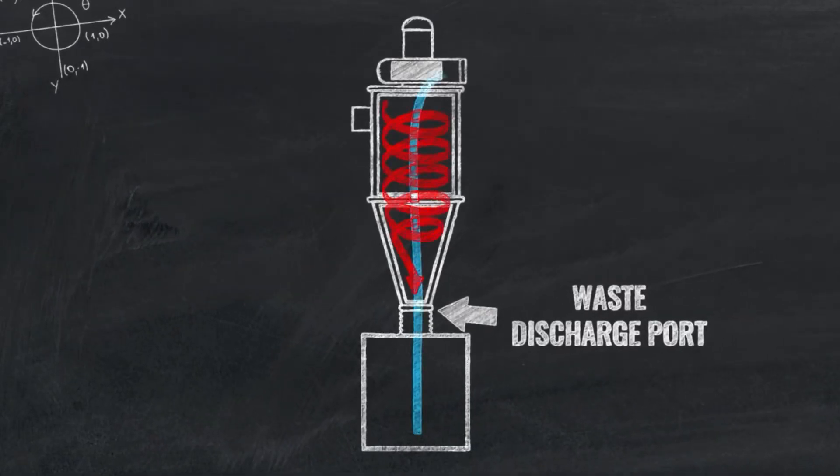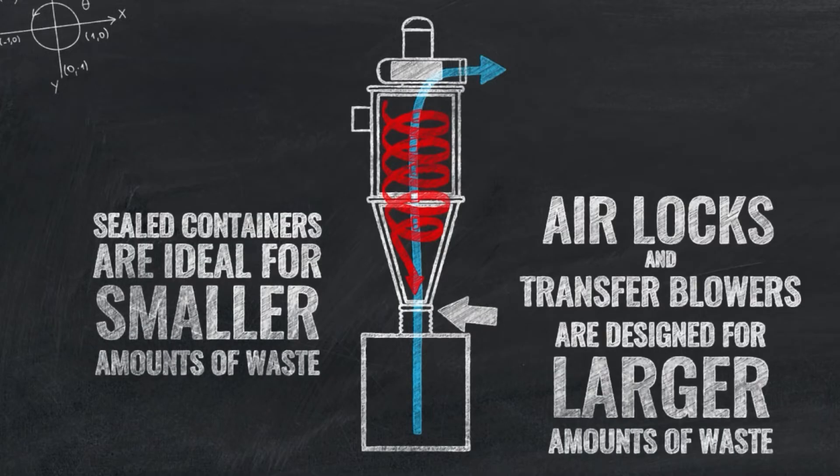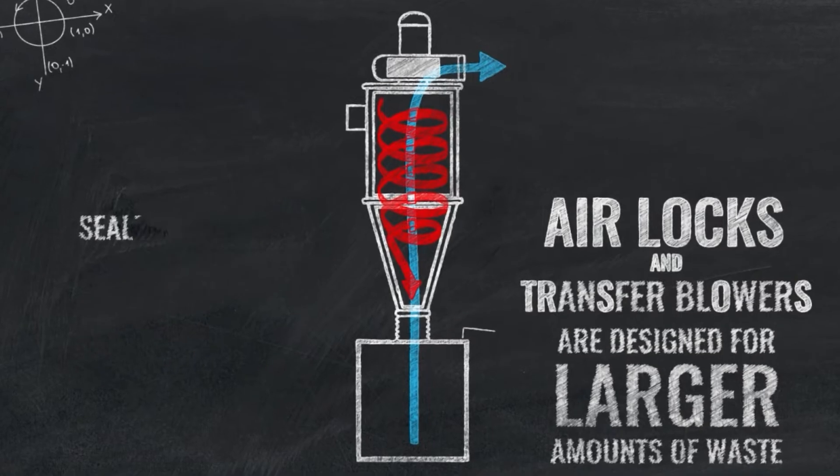Drums are commonly used to seal the bottom of the cone. Sealed waste containers like drums work well for small amounts of waste material. However, an airlock and transfer blower system are essential for transferring large amounts of waste.